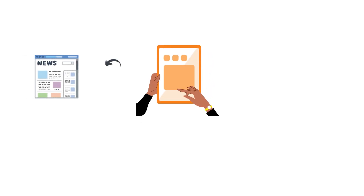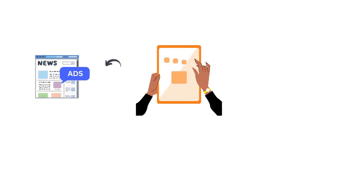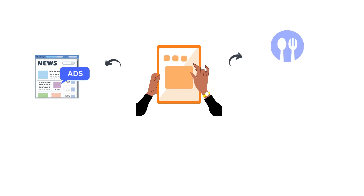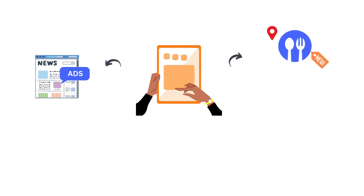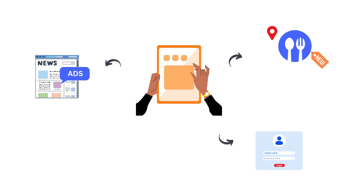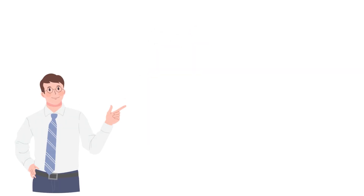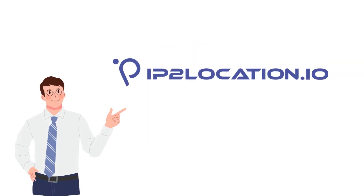Have you ever experienced any of these scenarios? You are browsing your favorite local news site and see personalized offers just for you. Your phone lights up with a tempting ad for that new restaurant right around the corner. Suddenly, a red alert warns you about a suspicious login attempt on your account. Each of these moments is shaped by the power of IP geolocation-based services and personalized data — with IP2Location.io, the IP geolocation API that unlocks a world of location-based possibilities.